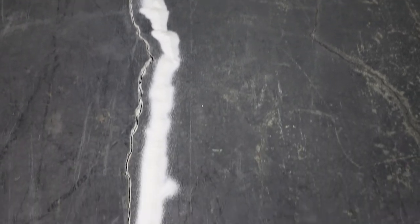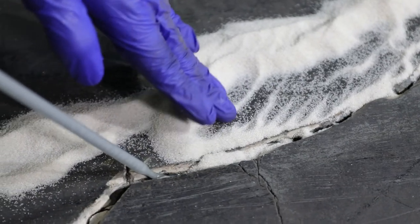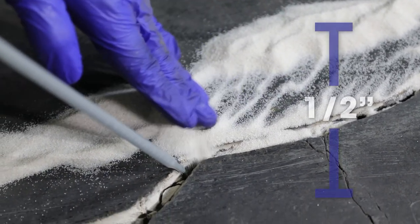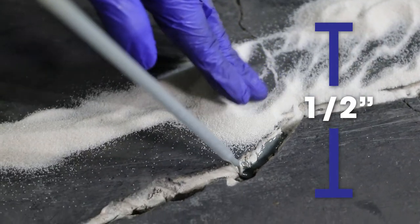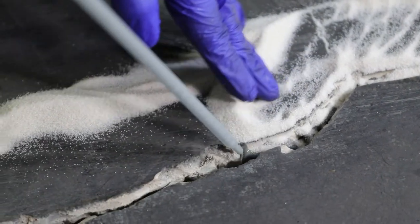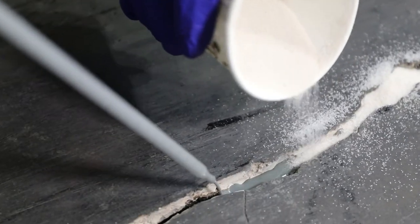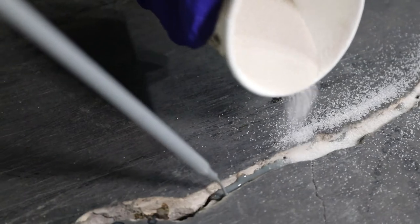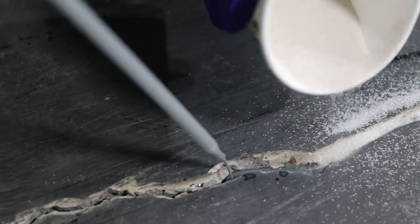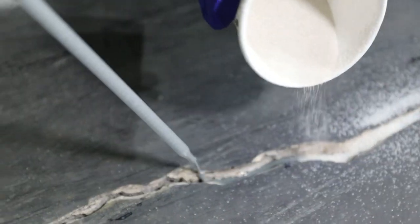For wider cracks, using your free hand, brush approximately half-inch of sand behind area injected. This will create an aggregate mix of 555 and sand, adding strength to the repair. If you have a second person helping with the repair, they may follow behind instead of brushing in the sand yourself. When injecting smaller cracks, sand is not required.